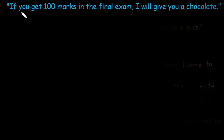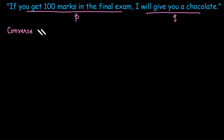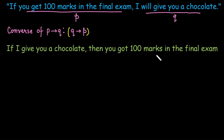Let's take one more example: 'If you get 100 marks in the final exam, I will give you a chocolate.' First, identify the hypothesis and the conclusion. The hypothesis P is: you get 100 marks in the final exam. The conclusion Q is: you will get a chocolate from me. The converse Q implies P is: if I give you a chocolate, then you got 100 marks in the final exam.